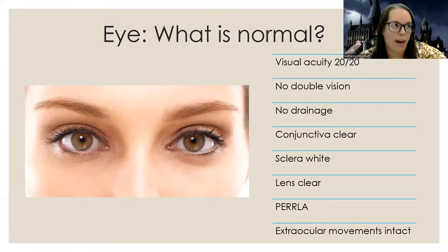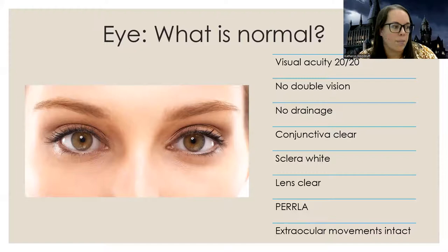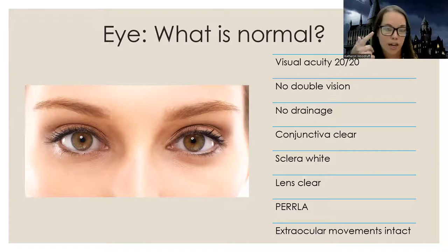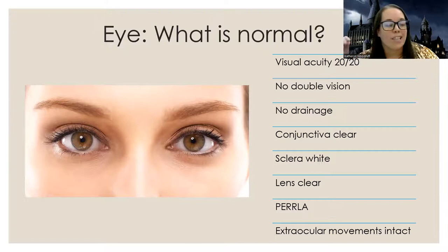Visual acuity is all about how well you can see. Double vision should not be present. There should be no drainage from the eye. The conjunctiva — the area under the lid — should be clear. The sclera should be white, which is the white part of your eye. Your lens should be clear with no cloudiness. You should have PERLA, which stands for pupils equal and reactive to light and accommodation. When you shine a light into someone's pupils, they should constrict — the pupil should go from a larger to a smaller size when light enters.